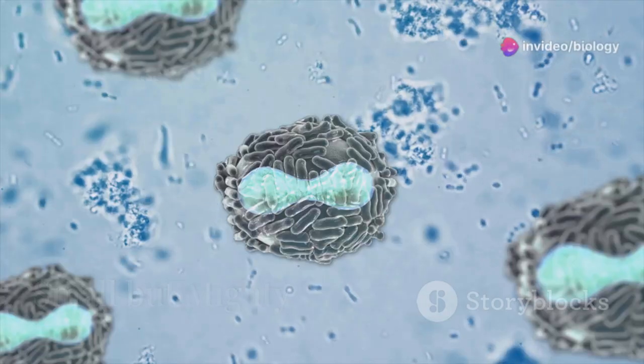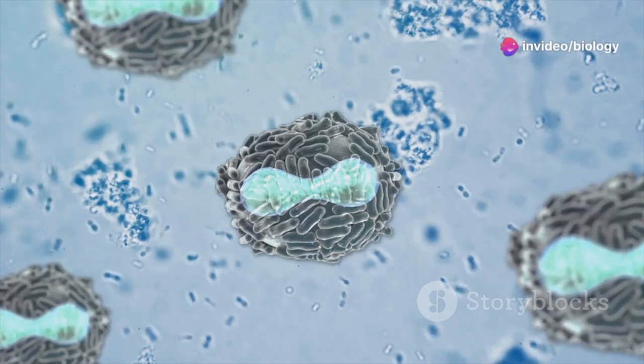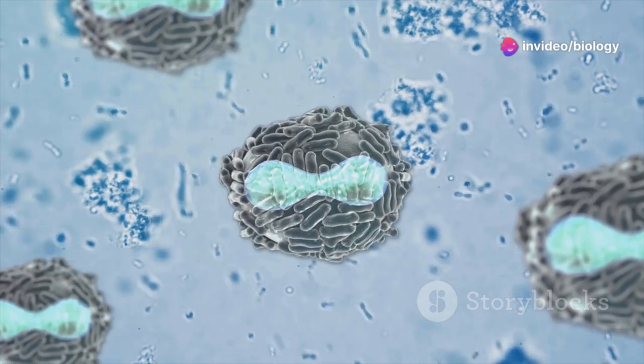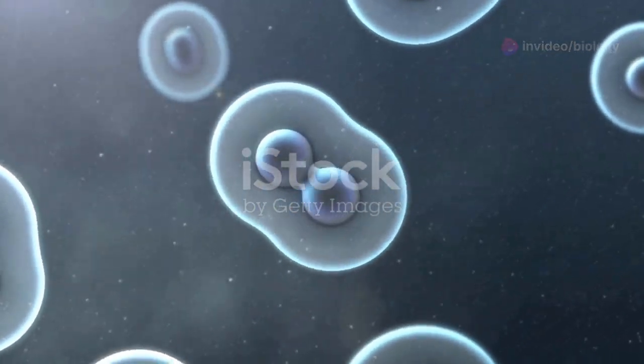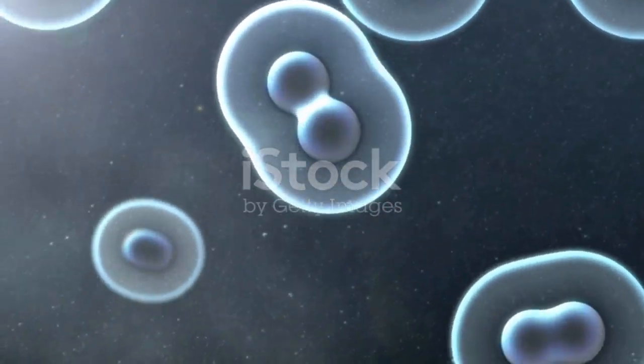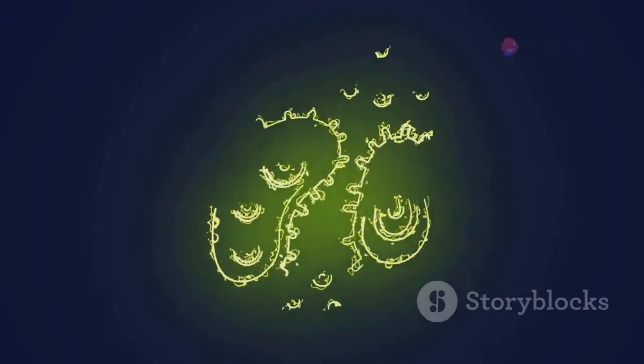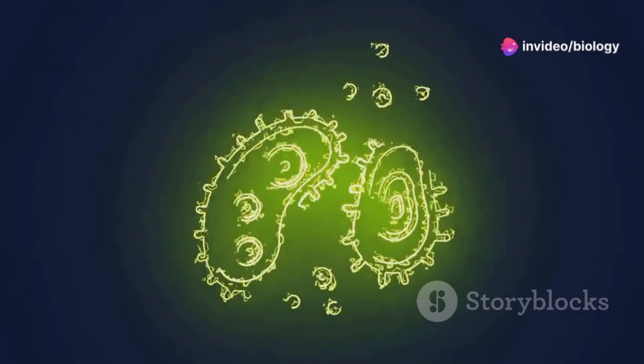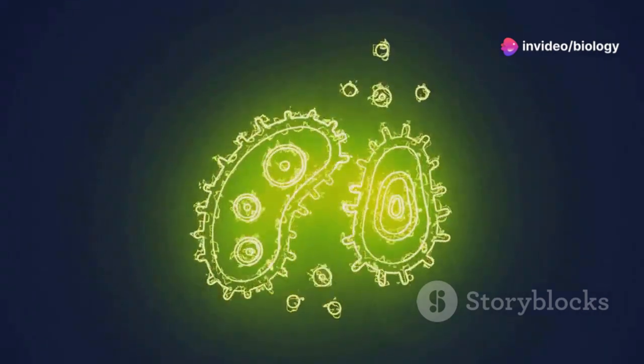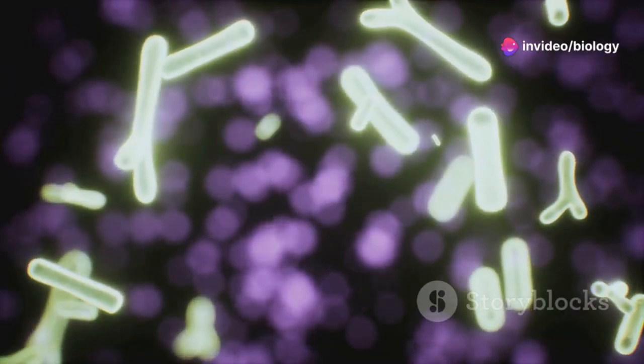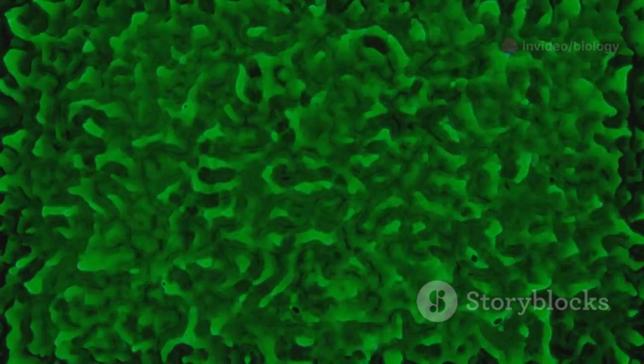Now that we've got the history down, let's talk about the different types of cells. First up, we have the prokaryotes, the simplest forms of life on earth - think bacteria and archaea. Don't let their small size fool you though. These single-celled organisms are tough, adaptable, and they play vital roles in our ecosystems.